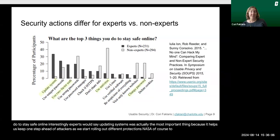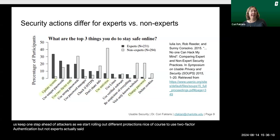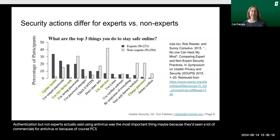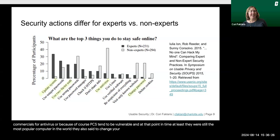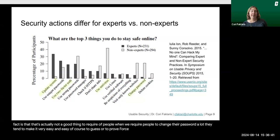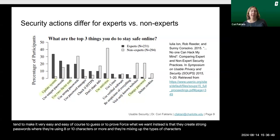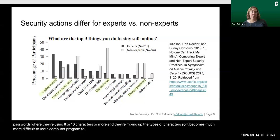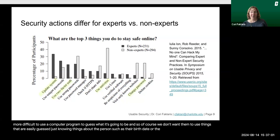Experts also said to use two-factor authentication. But non-experts said using antivirus was the most important thing, maybe because they'd seen a lot of commercials for antivirus, or because PCs tend to be vulnerable and were still the most popular computer at that point in time. They also said to change your password a lot. What security research has found is that that's actually not a good thing to require of people. When we require people to change their password a lot, they tend to make it very easy and easy to guess or brute force. What we want instead is that they create strong passwords using eight or ten characters or more, mixing up the types of characters, making it much more difficult to use a computer program to guess. And of course, we don't want them to use things that are easily guessed, like their birth date or the name of their firstborn child.